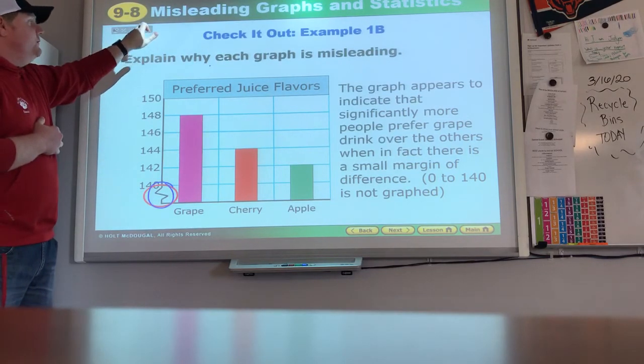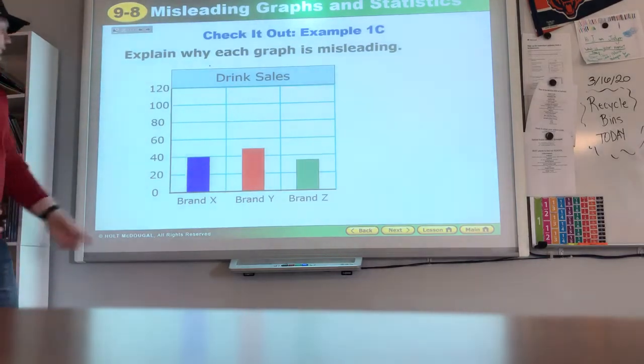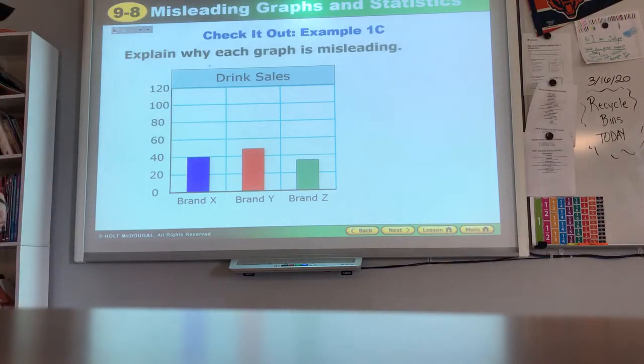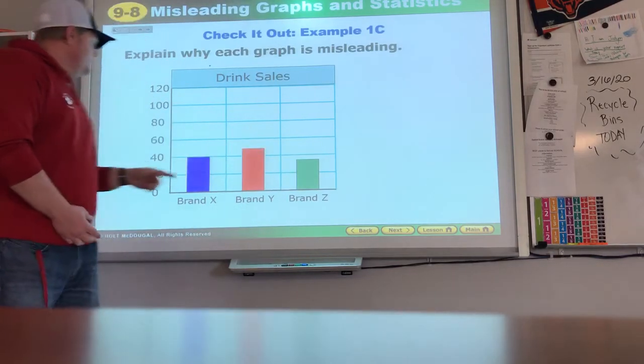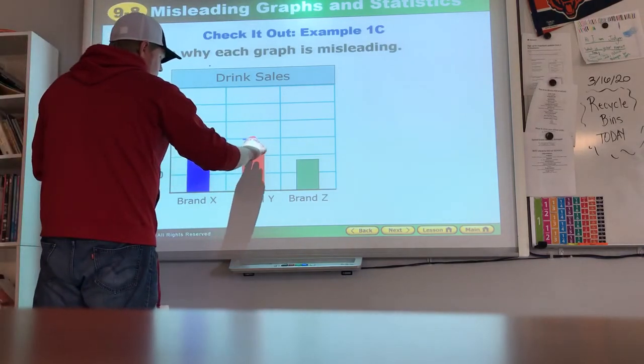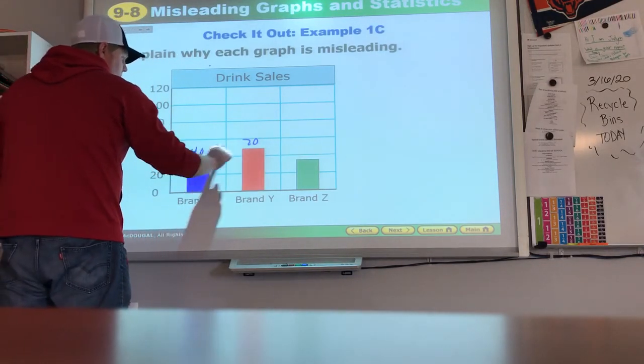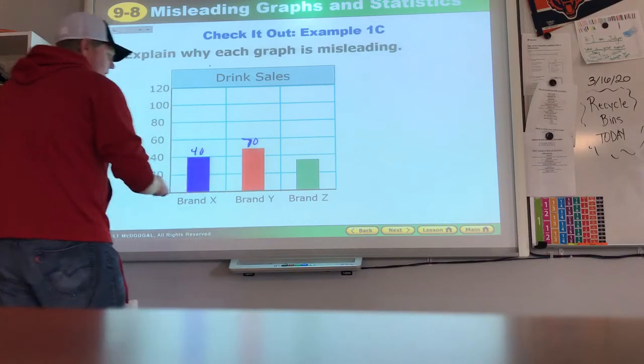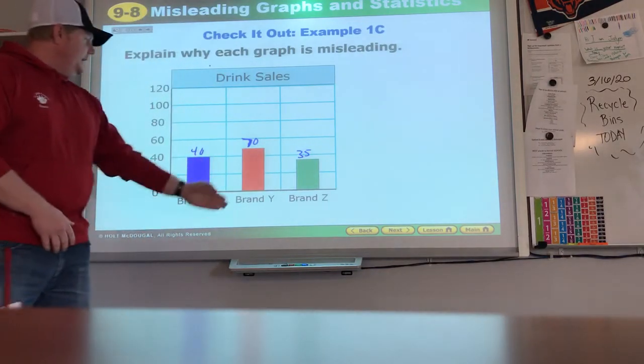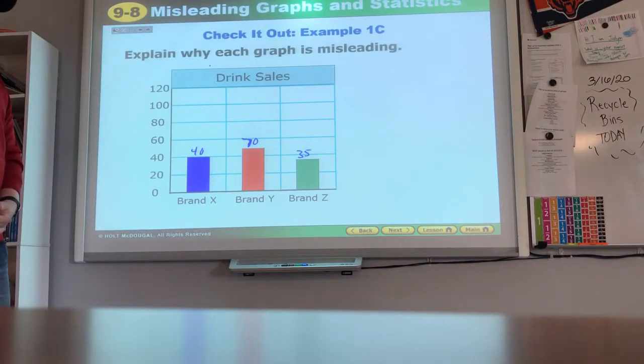The 0 to 140 is not graphed and that's what makes this appear like a great difference rather than a small difference. All right, so 20, 40, 60, 80, 100, 120. Brand X, brand Y, brand Z. Why is this graph misleading? Okay, it doesn't look like there's much difference between all of these, but if we think about the numbers,